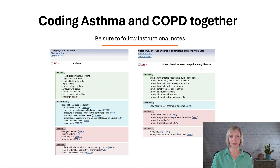This is indicated by the inclusion note found at Category J44, which states that this category includes asthma with COPD. When a patient is diagnosed with both asthma and COPD, the appropriate code to assign is J4489, Other Specified Chronic Obstructive Pulmonary Disease. These two conditions are linked in the alphabetic index by the term WITH, indicating that they should be coded as related.